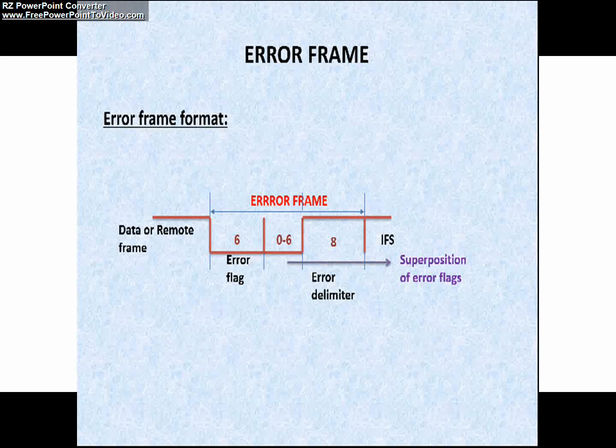In CAN network the nodes will be in error active and error passive state based on their transmit and receive error counters, formally known as TEC and REC counters. Suppose if the error active node detects an error in a CAN network then that node interrupts transmission of the current message by generating an active error flag. And if an error passive node detects the error in a CAN network then that node transmits the passive error flag to interrupt the current message transmission.